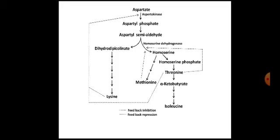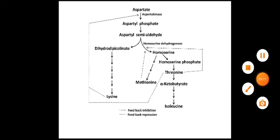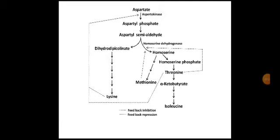Lysine belongs to the aspartate family. Aspartate gets converted to aspartyl phosphate through the key enzyme aspartokinase, which is under the control of lysine plus threonine — concerted feedback control exists over aspartokinase. Then there is a branch point: aspartyl semialdehyde gets converted to homoserine through homoserine dehydrogenase enzyme, also a key enzyme, controlled independently by methionine and threonine. This is the biochemical pathway. The position of homoserine dehydrogenase, responsible for synthesis of homoserine, is key to understanding the revertent mutants generated from homoserine auxotrophs.